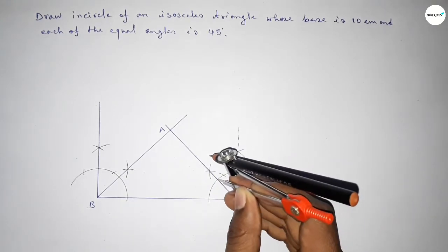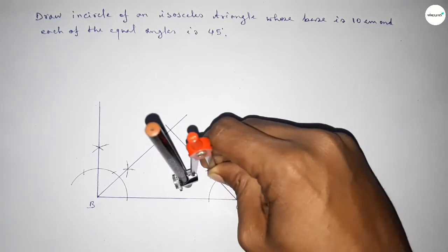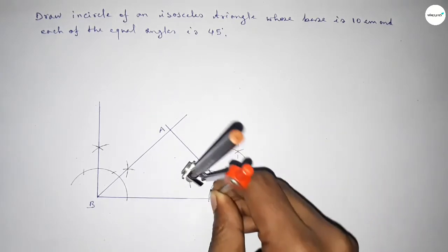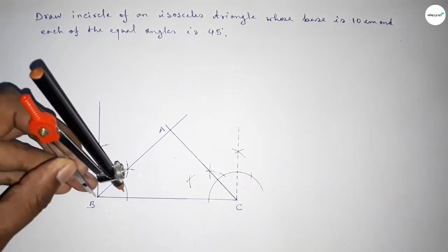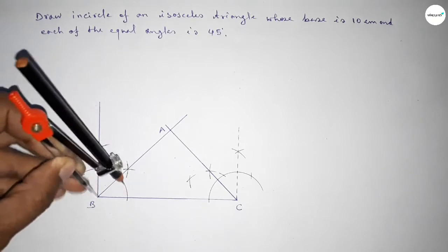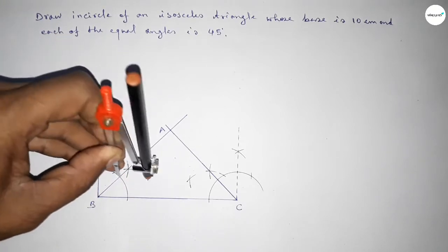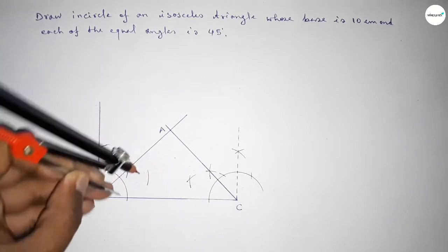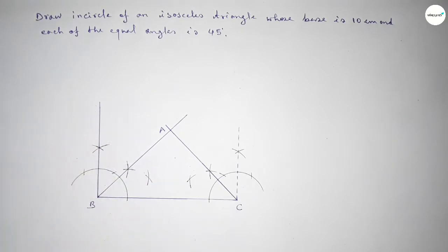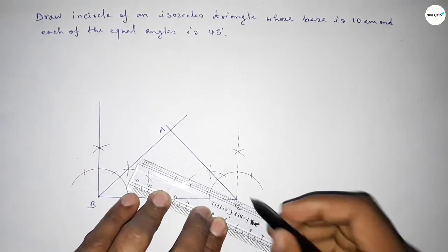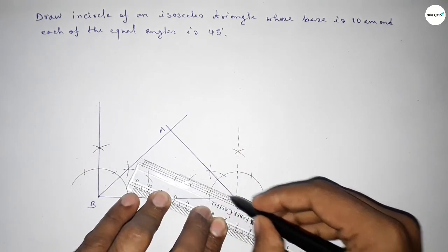Now we have to bisect angle C. With the same length putting the compass here and drawing an arc, with the same length cutting here. Again with the same radius putting the compass here and cutting here, with the same length putting the compass here and cutting here. Now joining this line.